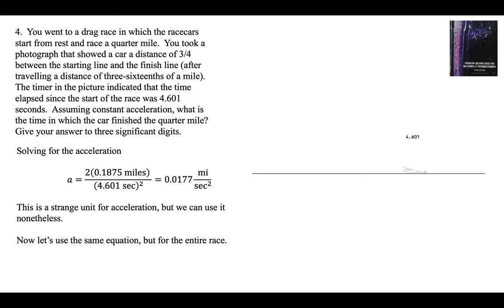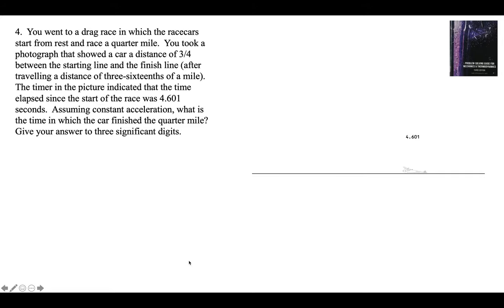So now we're going to use the same equation we did before, but we're going to do it for the entire race, because we now have the acceleration. We don't have the time. We know the distance is a quarter mile. We know the acceleration. We want to solve for the time. The initial speed is zero. This is for the entire quarter mile. For the entire race, the distance is a quarter mile. The acceleration is the same as we are assuming, and we can solve for T.